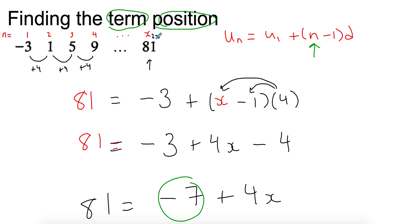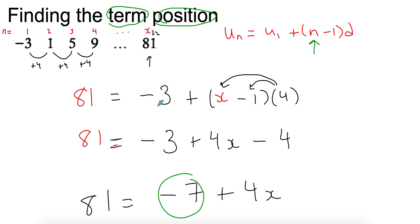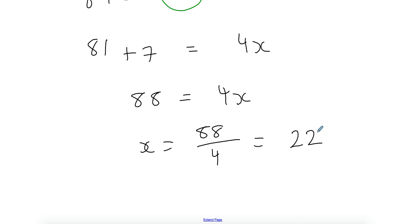Always ask yourself: can I check my answer? Yes, you can. If I substitute 22 into the formula — 22 minus 1 is 21, 21 times 4 is 84, 84 minus 3 gives me 81. So make sure you check your answers. It's the easiest way to avoid any deduction in marks.